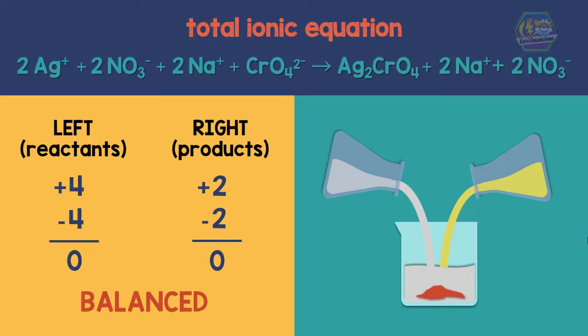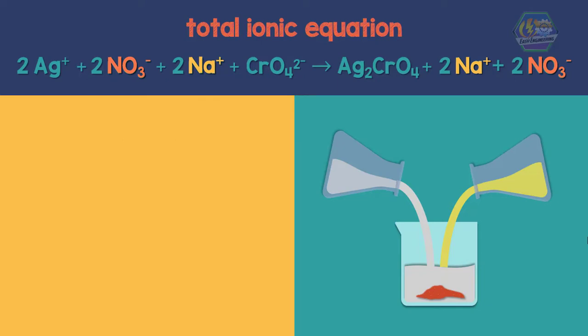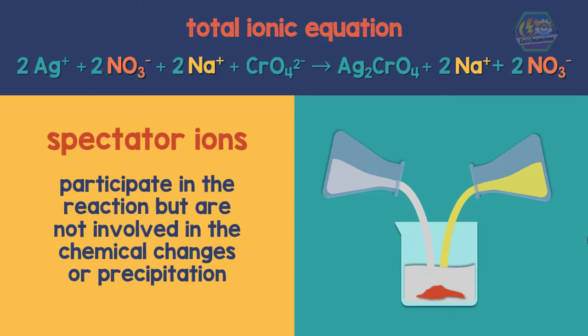Notice also that sodium and nitrate appear both on the left and right, meaning there is nothing happened to them. They are called spectator ions. They participate in the reaction but are not involved in the chemical changes or precipitation.